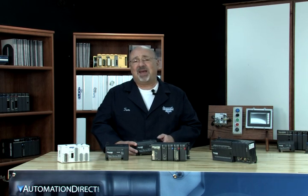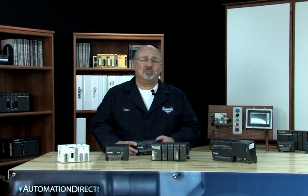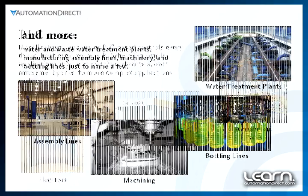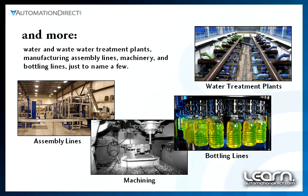You probably encounter PLC-based controls every day without even realizing it. Aside from their primary use in automating factories and processes, PLCs are also used in simple applications such as car washes, elevators, and even amusement parks. More complex PLC applications include water and wastewater treatment plants, manufacturing assembly lines, machinery and bottling lines, just to name a few.